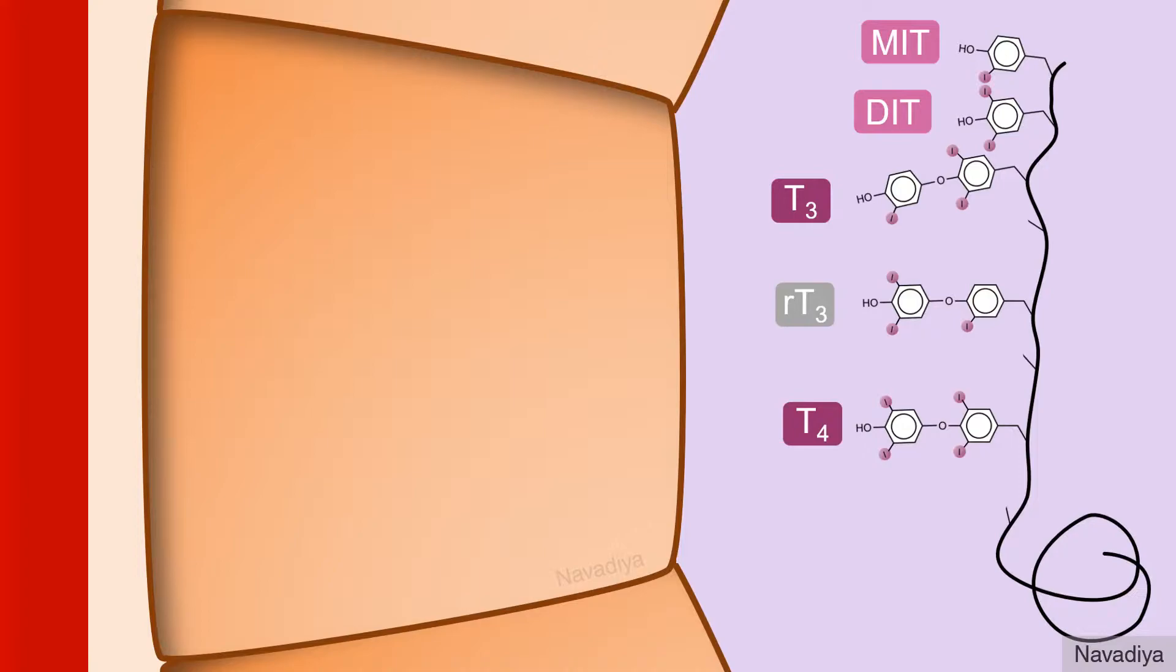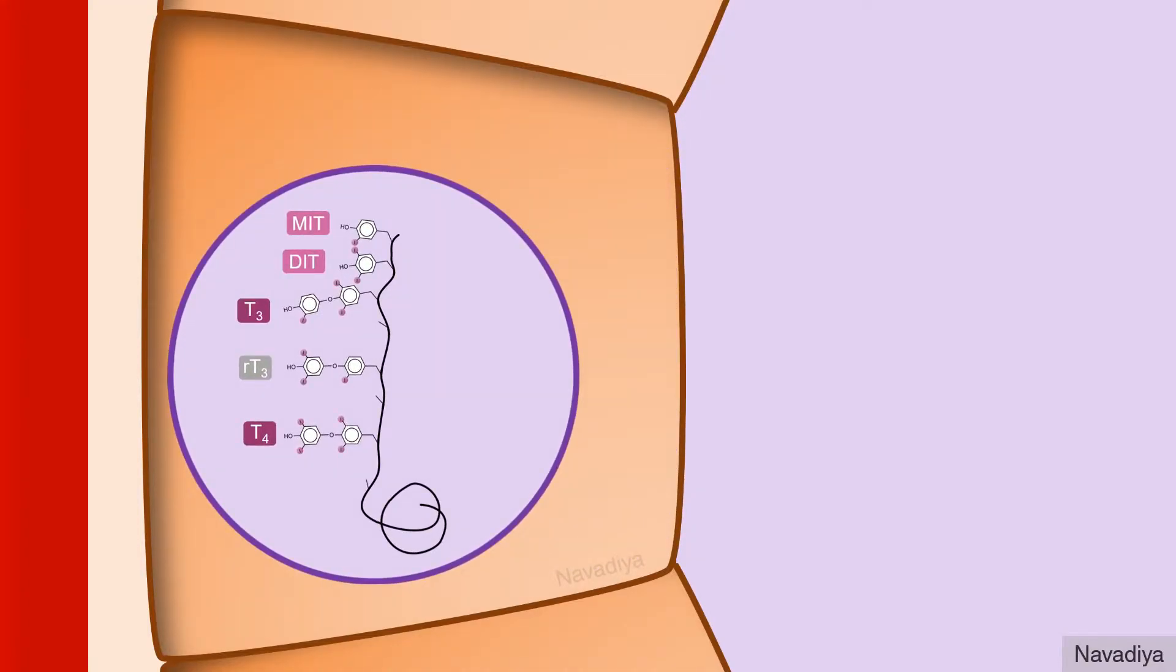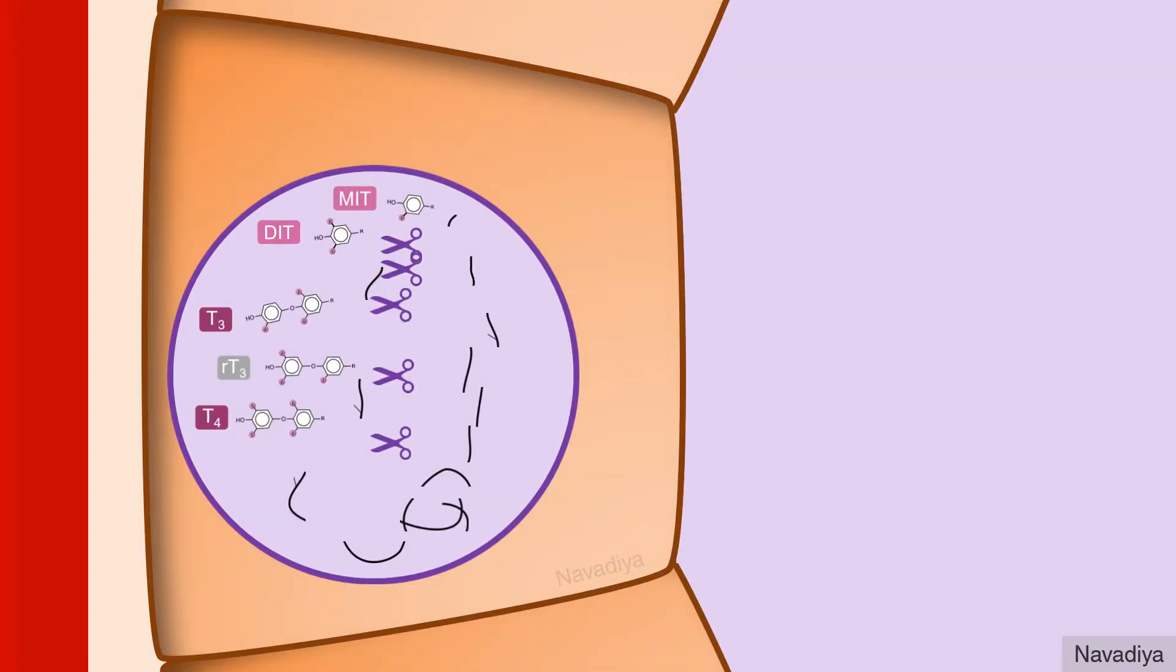Then when there is time for release, the thyroglobulin is taken up by the cell by process of endocytosis. Then lysosome fuses with this endocytic vesicle and releases its enzyme. The enzyme hydrolyzes the thyroglobulin to form free T3, T4, monoiodotyrosine and diiodotyrosine.